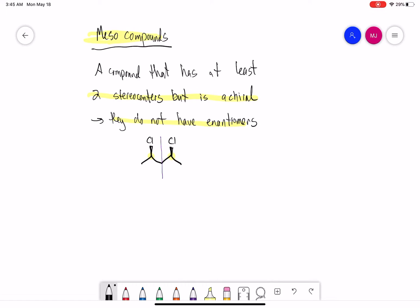If I try to draw an enantiomer, if I switch these stereocenters, what you see is that this is not actually an enantiomer—it's the same molecule.